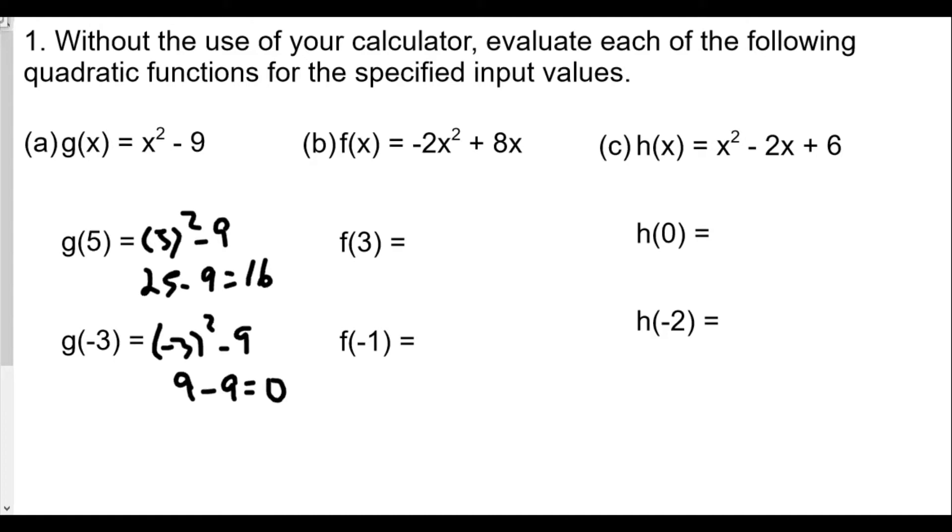For part b, f(x) equals negative two x squared plus eight x. We're going to plug in three. So negative two times three squared plus eight times three. That gives us negative two times nine plus 24. So it's negative 18 plus 24. Don't forget that negative there because signs do matter. Negative 18 plus 24 is just positive six.